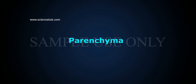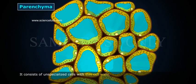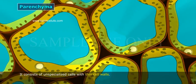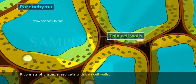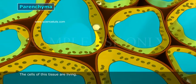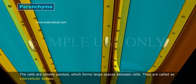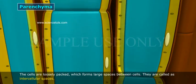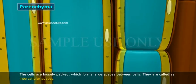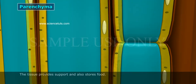Parenchyma is a type of permanent tissue. It consists of unspecialized cells with thin cell walls. The cells of this tissue are living. The cells are loosely packed, which forms large spaces between cells, called intercellular spaces. The tissue provides support and also stores food.